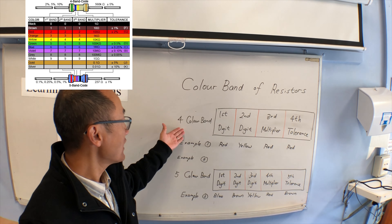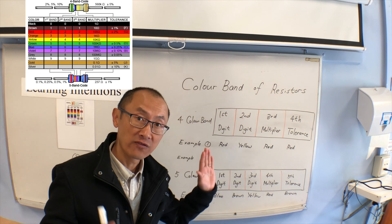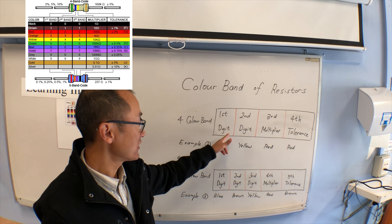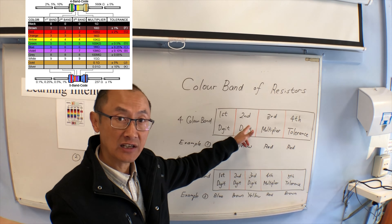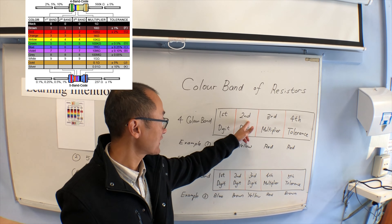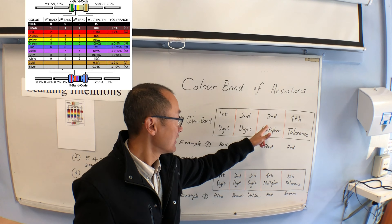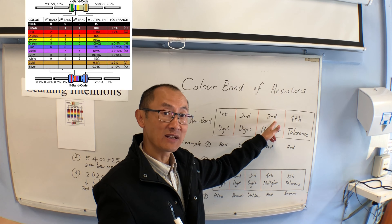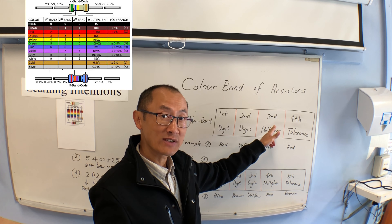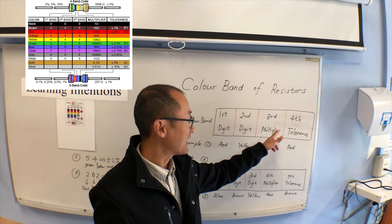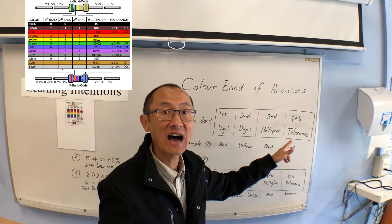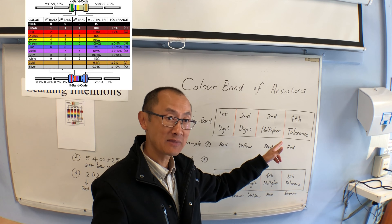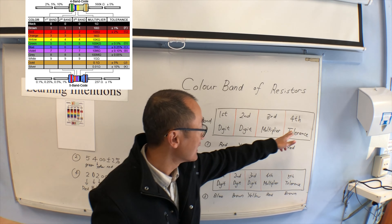If you have a four color band resistor, the first one is called the first digit, and the second is called the second digit. The third color is a multiplier — it doesn't represent a number — it means times one, times ten, times one hundred.